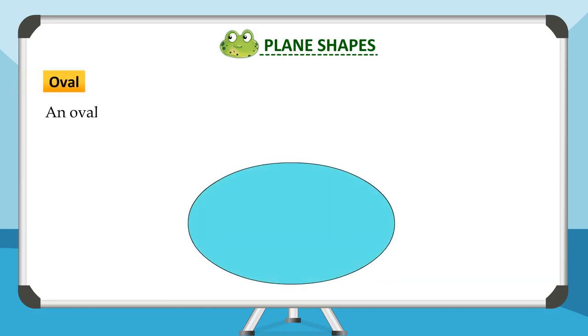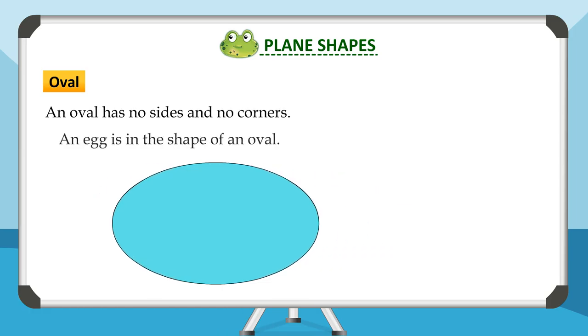An oval has no sides and no corners. An egg is in the shape of an oval.